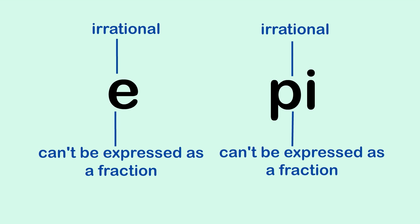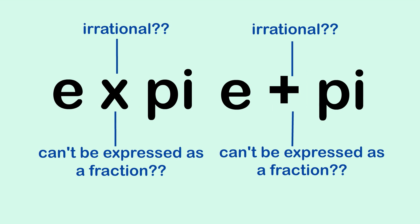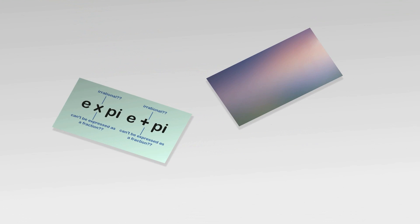Number 9. E and pi are irrational, they can't be expressed as fractions, but we don't know the situation with regard to E times pi or E plus pi. Are they irrational or rational? We don't know.